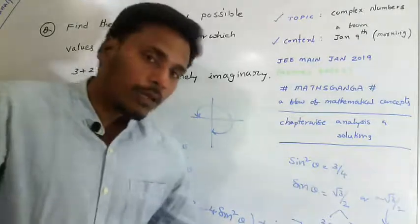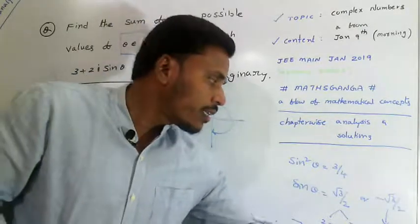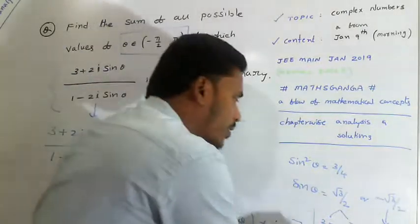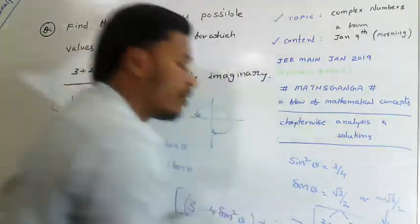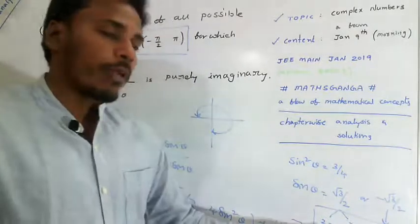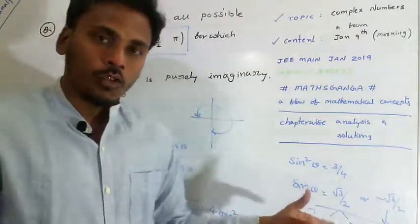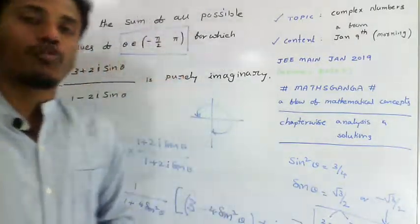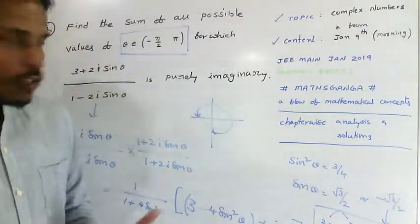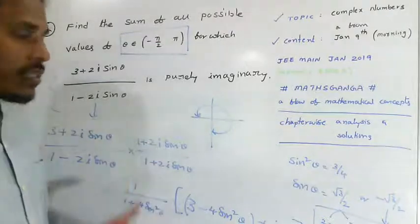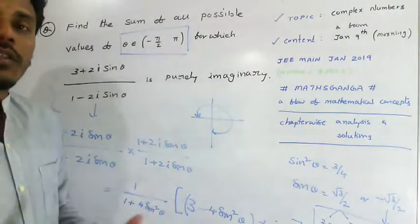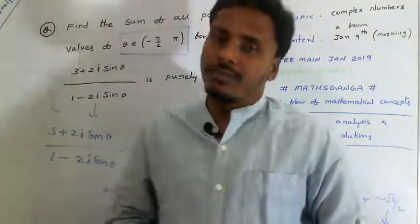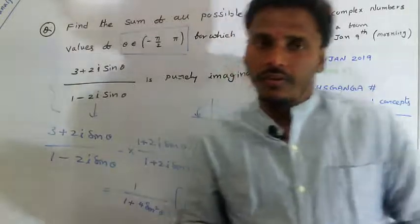Finally, there are three possible values of theta: 2π/3, π/3, and -π/3. The sum of all three values is 2π/3. So the answer for this question is 2π/3. It is a very easy question based on the definition of complex numbers. Thank you.